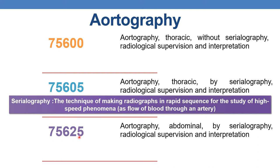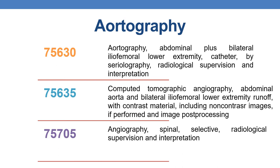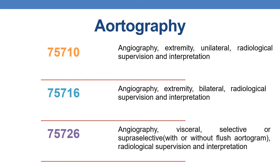The next is 75635 — CT angiography, abdominal aorta and bilateral iliofemoral lower extremity runoff with contrast, including non-contrast images if performed and image post-processing. Next, 75705 — angiography, spinal, selective, radiological supervision and interpretation. Next, 75710 — angiography, extremity, unilateral, radiological supervision and interpretation.